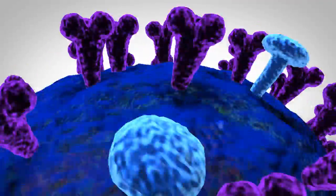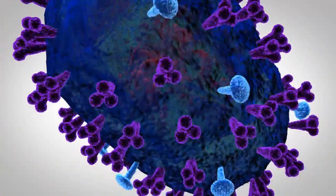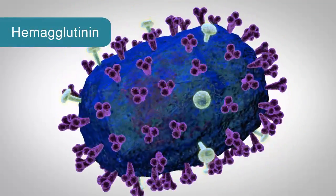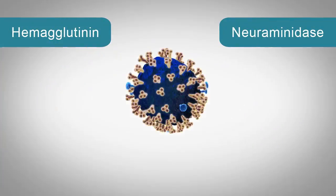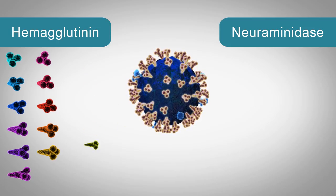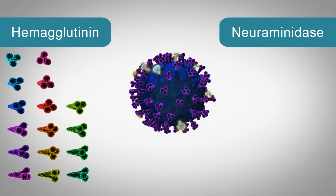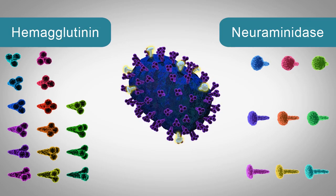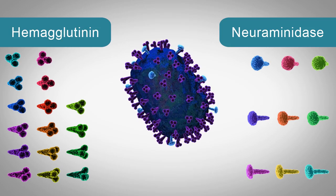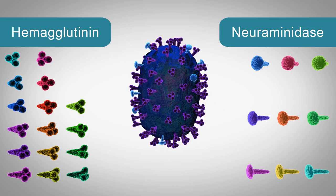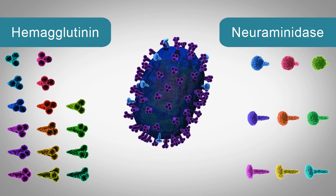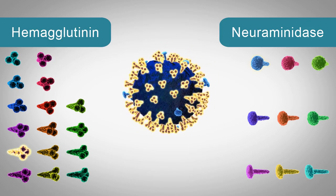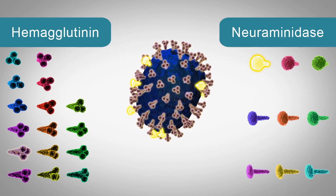The immune system targets two proteins on the surface of influenza A viruses: hemagglutinin and neuraminidase. Hemagglutinin has 16 confirmed subtypes of proteins. Neuraminidase has 9. From these protein combinations, scientists name influenza viruses. For example, an H5N1 virus contains hemagglutinin subtype 5 and neuraminidase subtype 1.